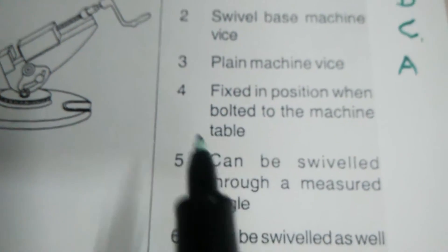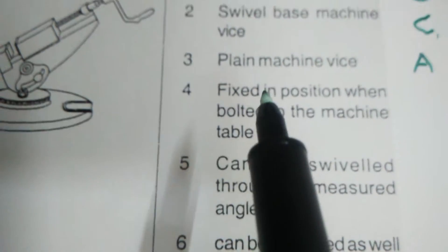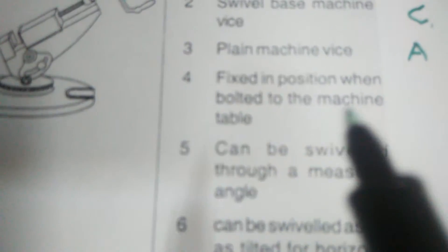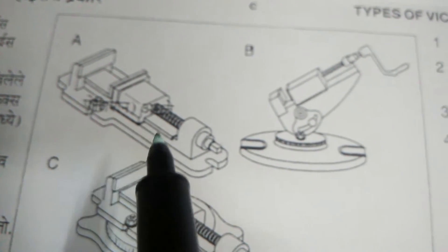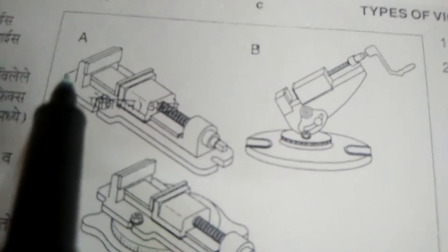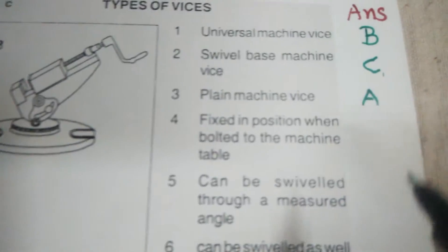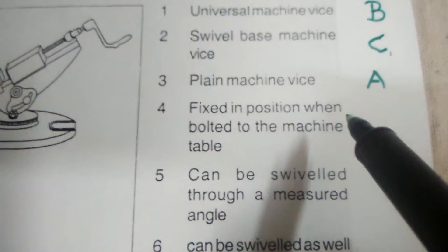Fourth question: Fixed in position when bolted to the machine table. The correct answer is A. This is Plain Vice. Write down here, fourth is A.